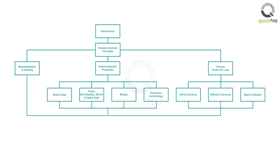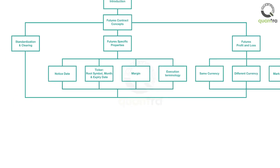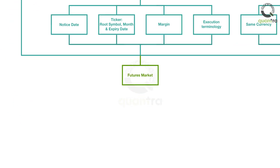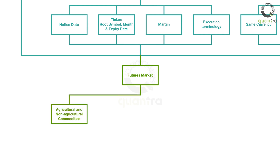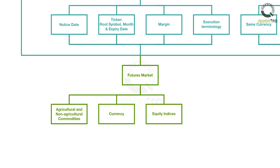In the second part of the course, we will get into the details of how futures instruments work, and how that will affect the way you trade them, along with thinking of your strategies. You will be enlightened on the various types of futures: commodities, currency, equity indices, and interest rates.